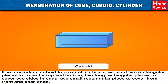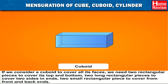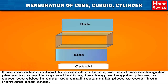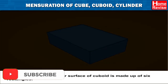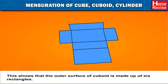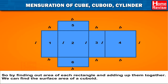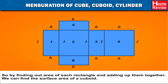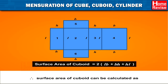If we consider covering all faces of a cuboid, we need two rectangular pieces for the top and bottom, two long rectangular pieces to cover the two side ends, and two small rectangular pieces to cover the front and back ends. This shows that the outer surface of a cuboid is made up of six rectangles. By finding the area of each rectangle and adding them together, we can find the surface area of a cuboid. Therefore, surface area of cuboid = 2(length × breadth + breadth × height + height × length).